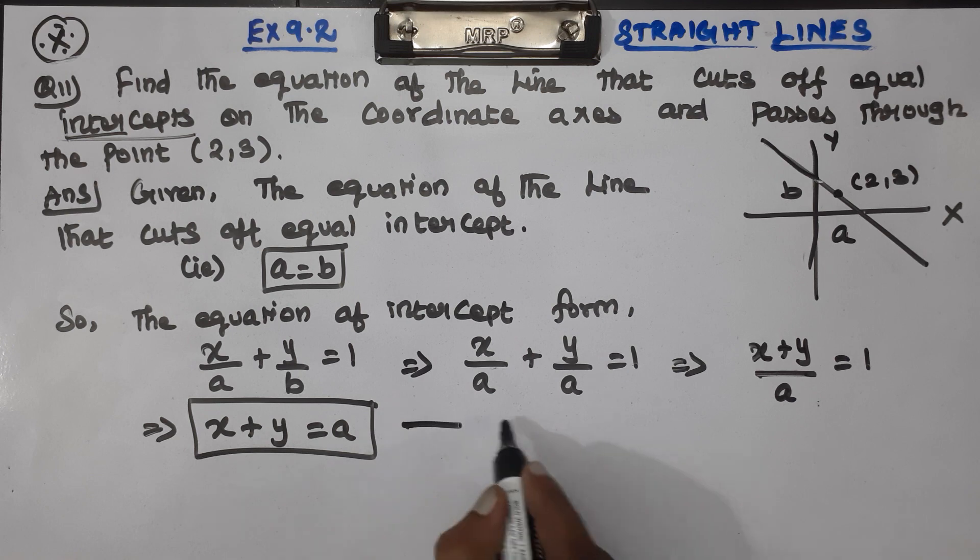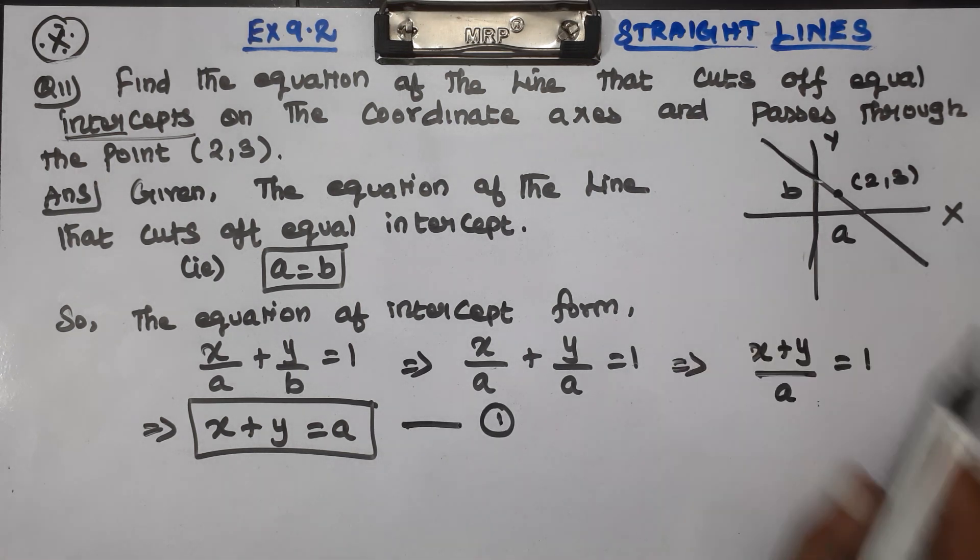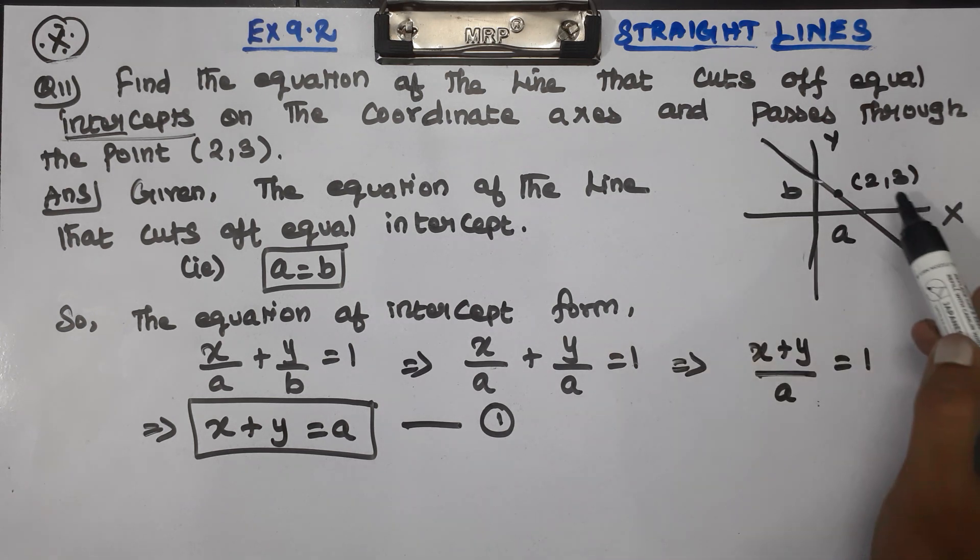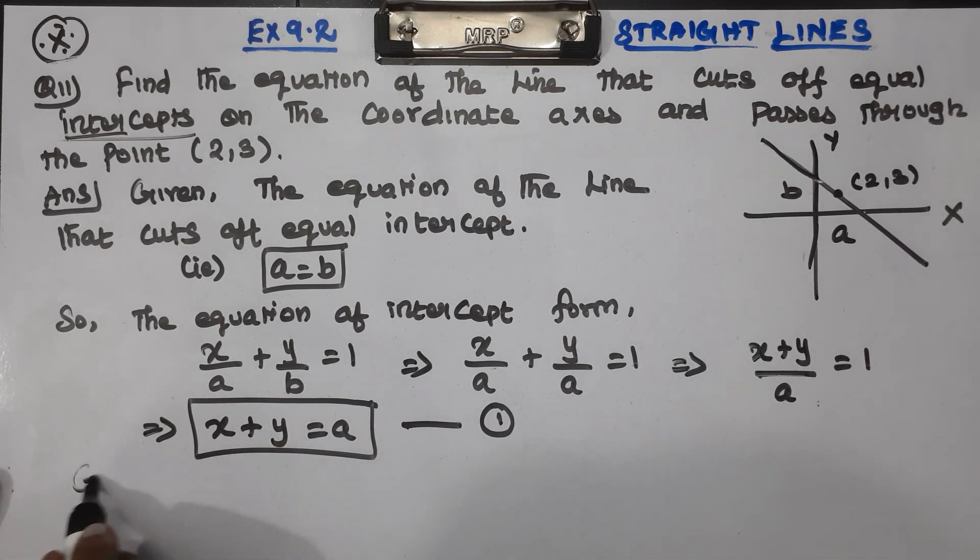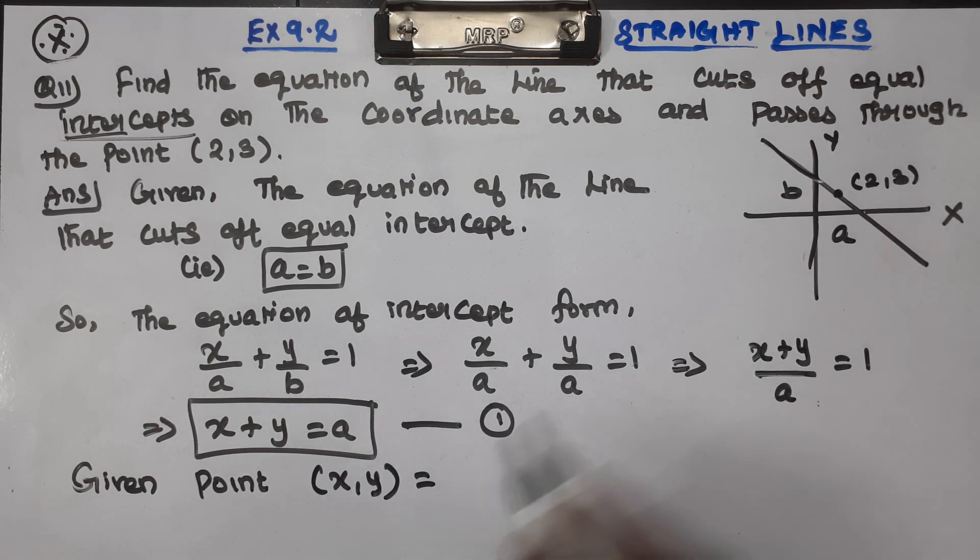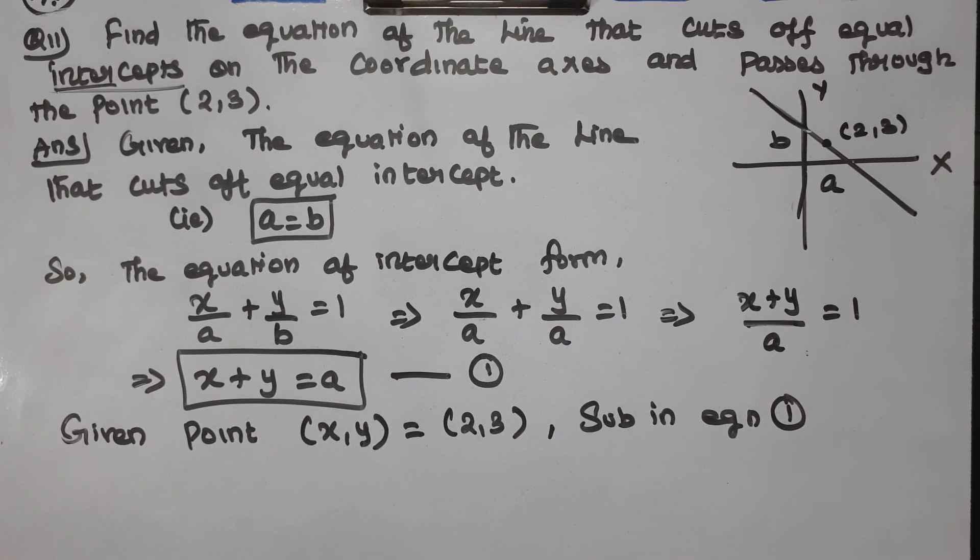Now to find the value of a, use the given point (2,3). That is x value is 2 and y value is 3. Substitute in equation 1. So 2 plus 3 equals a, which implies a equals 5.